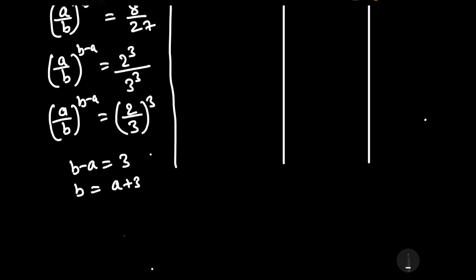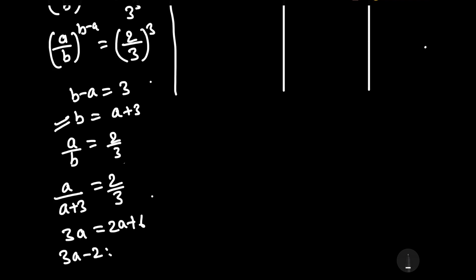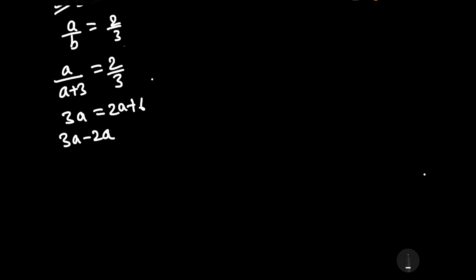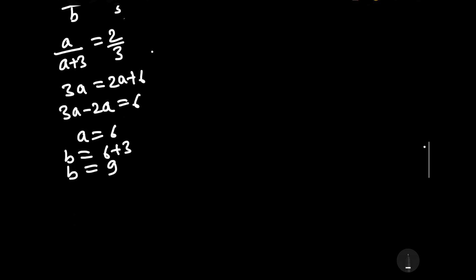Comparing bases, a by b equals 2 by 3. Replacing the value of b as a plus 3, we have a upon a plus 3 equals 2 by 3. Cross multiplying gives 3a equals 2a plus 6, so a equals 6. Replacing the value of a, b equals 6 plus 3, which equals 9. From case 1, the solution is a equals 6 and b equals 9.